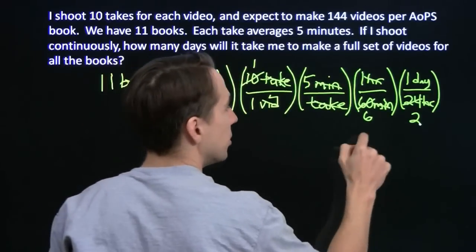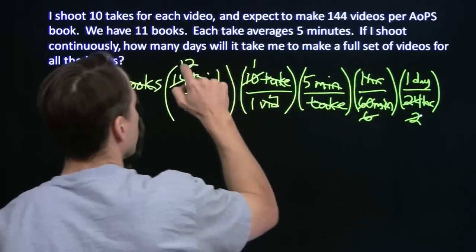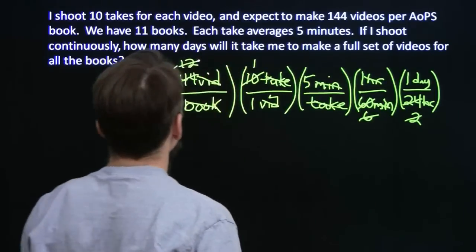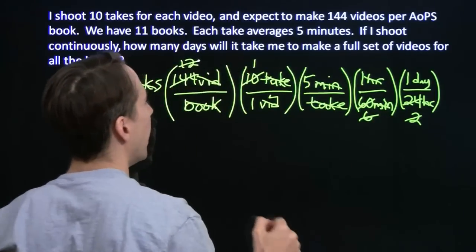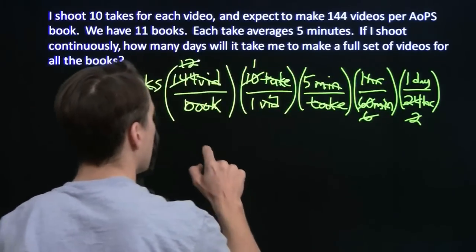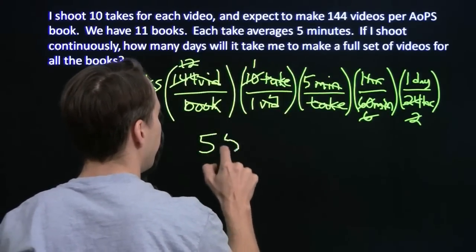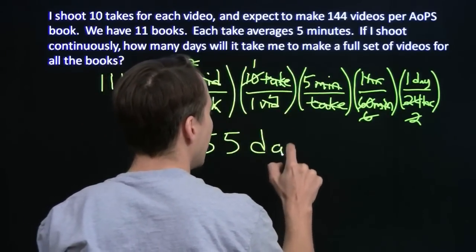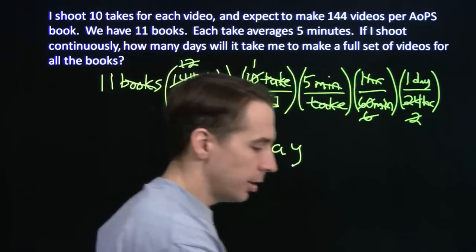6 times 2 is 12, so I take out 6 times 2 is 12, knock those both out, and we're left with 11 times 5. 55 days! I'm going to need a lot more coffee.